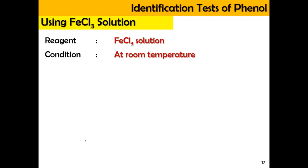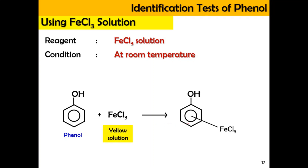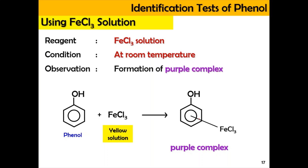Phenol can also be identified using ferrum trichloride (FeCl3) solution at room temperature. When phenol reacts with FeCl3, the iron trichloride attaches to the pi electrons in the middle of the phenol ring, producing a purple complex. The FeCl3 solution is initially yellow, but upon reacting with phenol it turns purple. The formation of this purple complex confirms the presence of phenol.